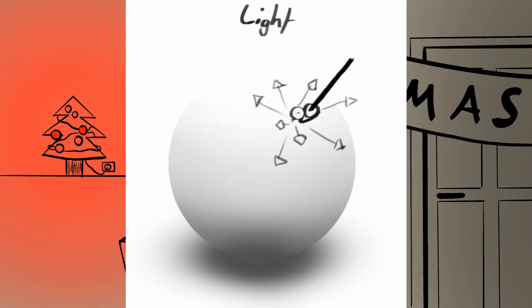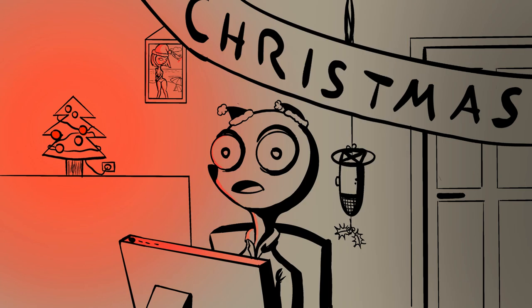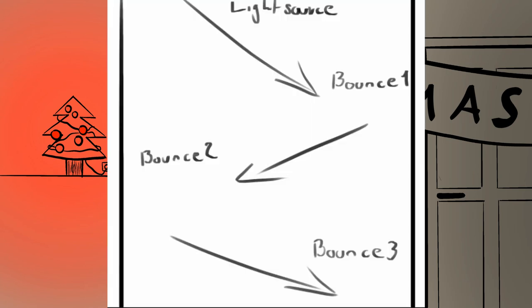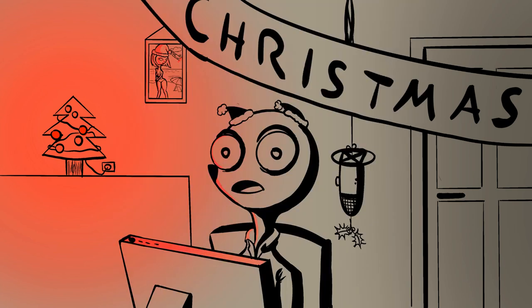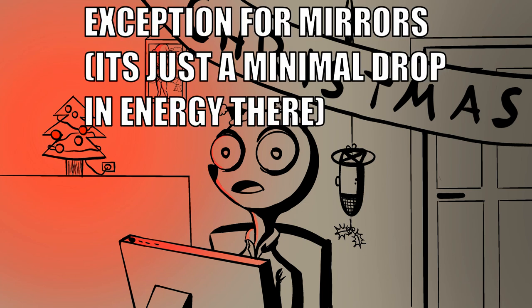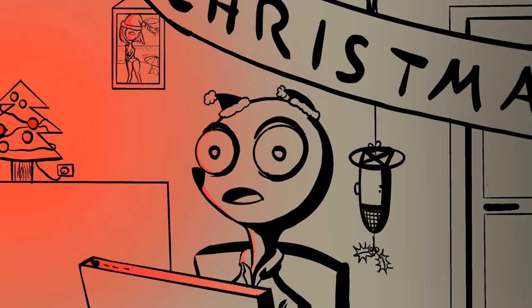And if this object is in close proximity to another object, some of the light gets lost while bouncing off the surfaces multiple times. Yes, it is always like that — light always loses a little bit of its energy when bouncing off a surface.